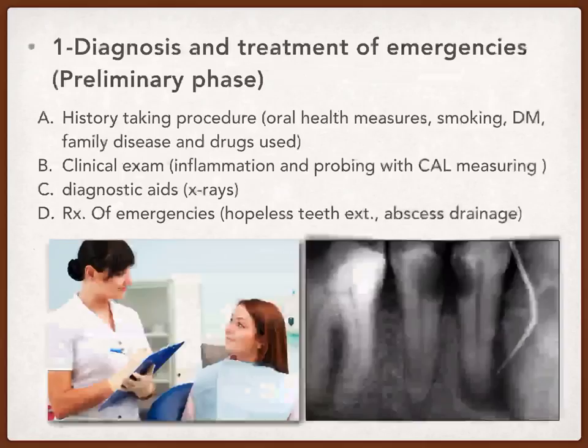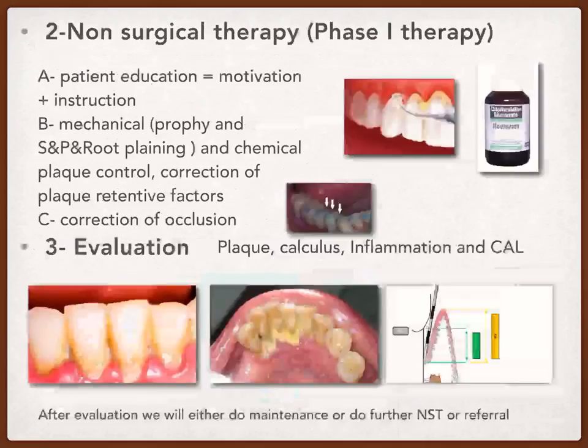We use diagnostic aids like x-rays, which are the most significant tools here, because all of the periodontium except for the gingiva is hidden and cannot be seen without x-rays. After history taking, clinical examination, and diagnostic aids, we make the definitive diagnosis. Then we treat emergencies, for example, extraction of hopeless teeth and abscess drainage. This completes the preliminary phase.